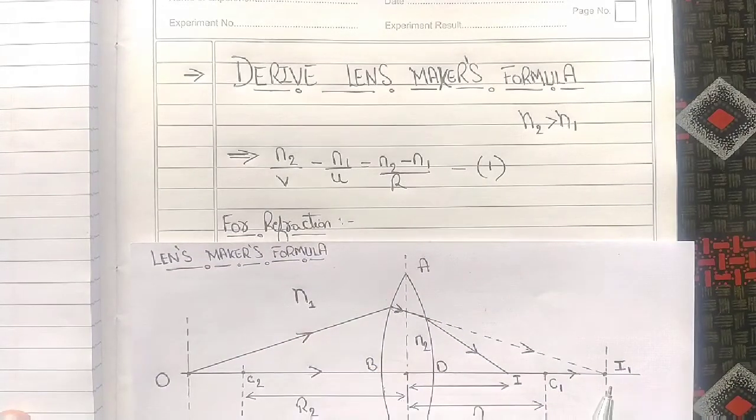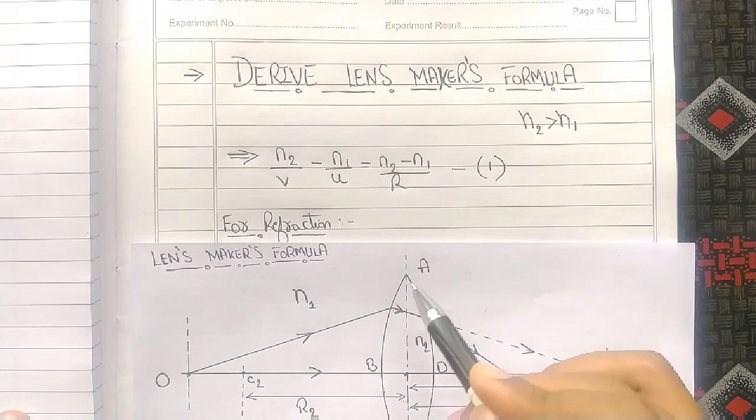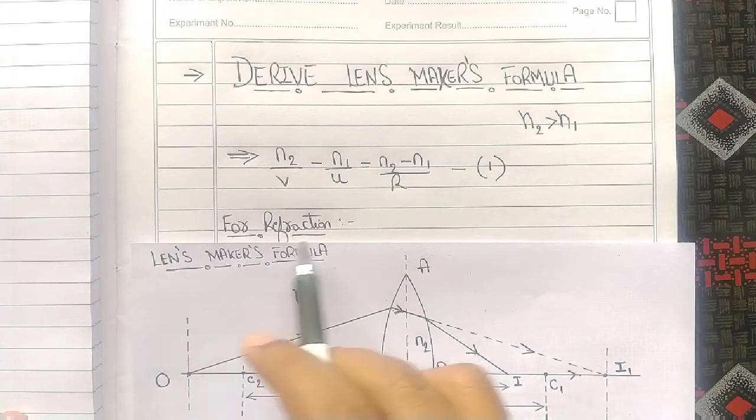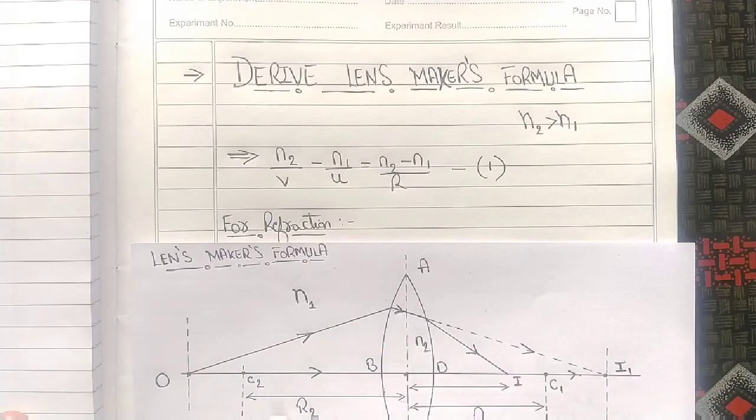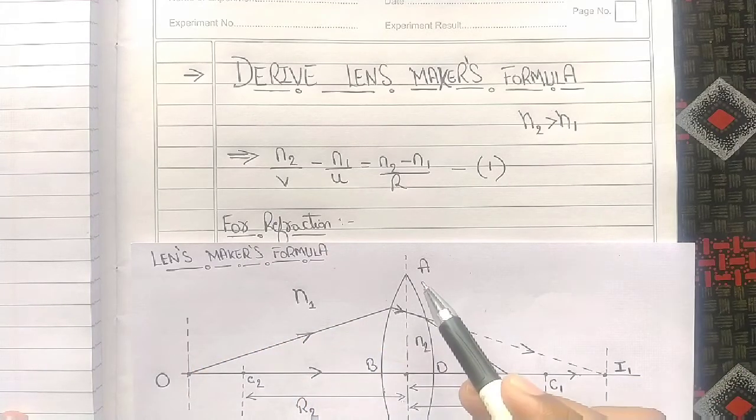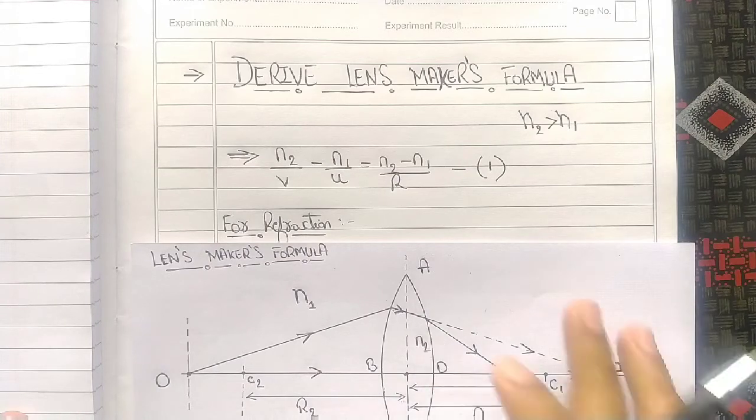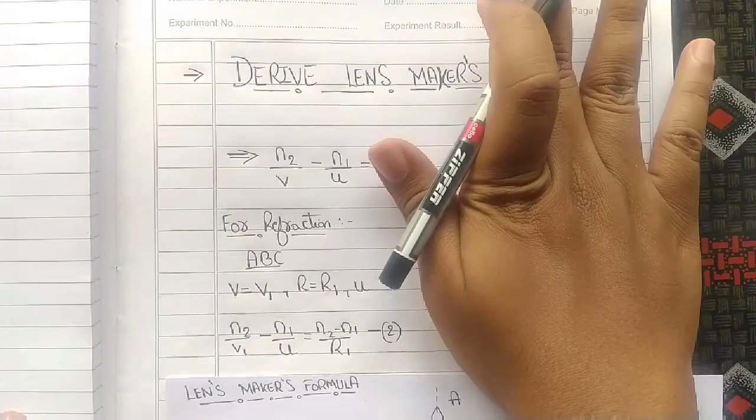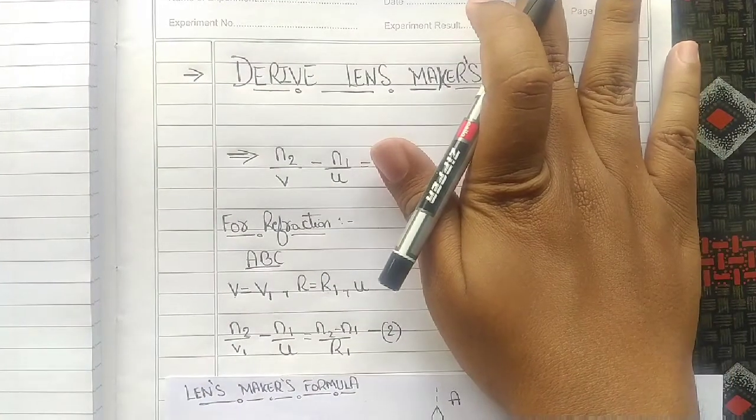For refraction, we split the double convex lens as ABC and ADC. We will take Case 1 as ABC and Case 2 as ADC. Now, don't look at ADC. Only look at ABC.